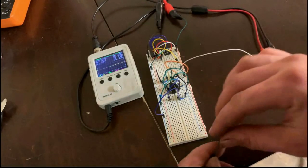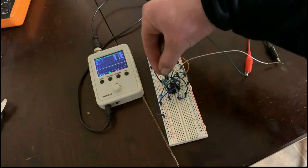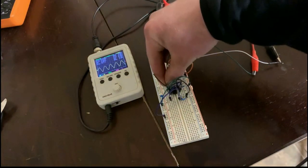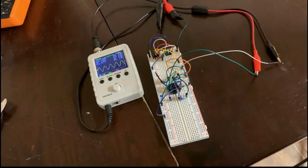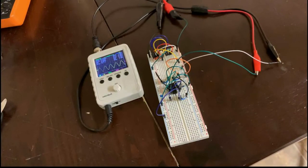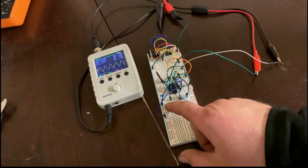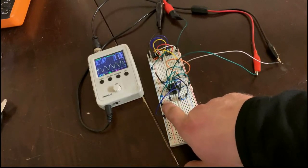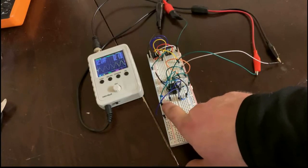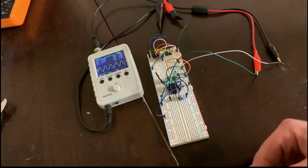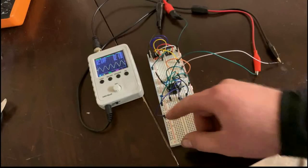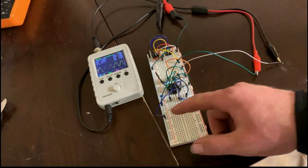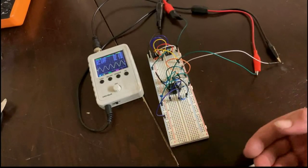I'm going to hook this negative to the scope to the virtual ground right there. And then the positive, I'll go ahead and hook to pin two. And as you can see, it's a pretty nice little sine wave. Not the best one I've ever seen, but it's pretty stable. About 8 kilohertz. If you reduce the capacitance, the frequency will increase. And if you make the capacitance larger, it will decrease on this particular circuit.